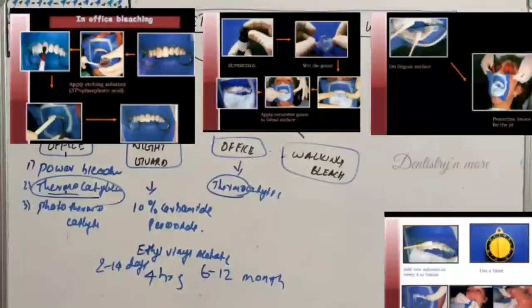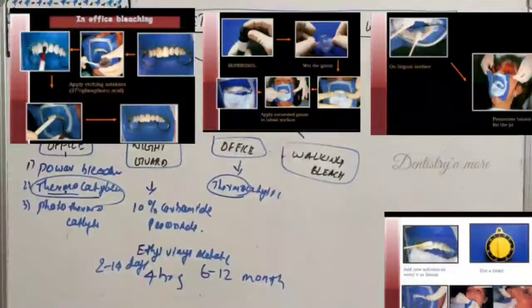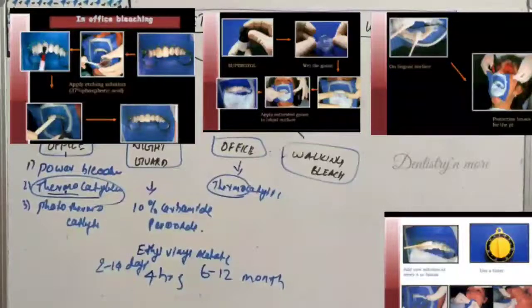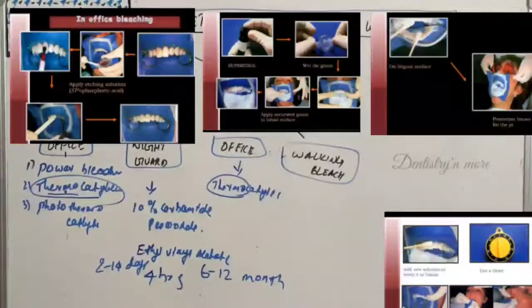In-office bleaching is indicated in mild fluorosis, tetracycline stains, superficial stains, and when matching existing crown color to lighter natural teeth. It is contraindicated in extensive caries, hypersensitivity, root exposure, severe discoloration, and extensive restoration.